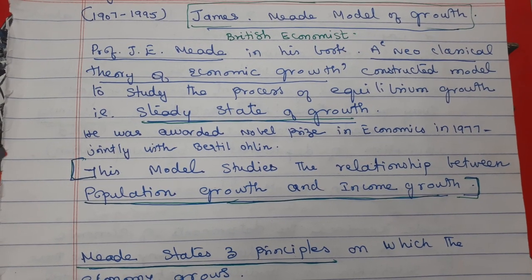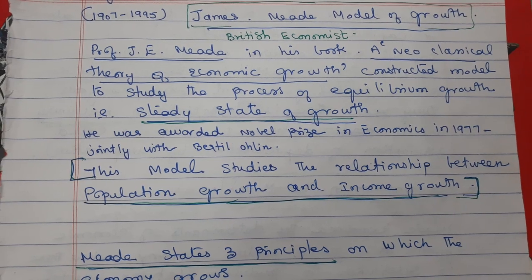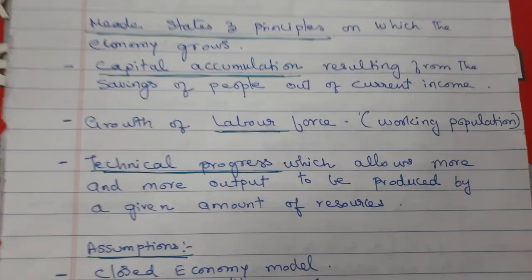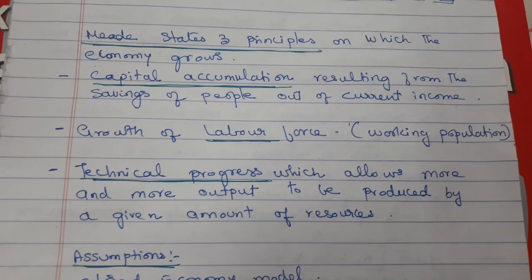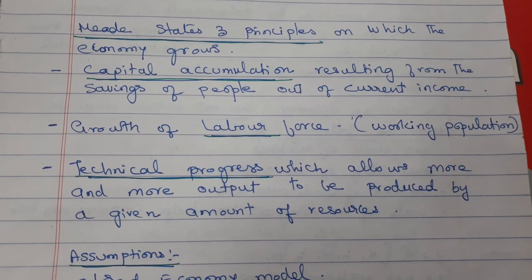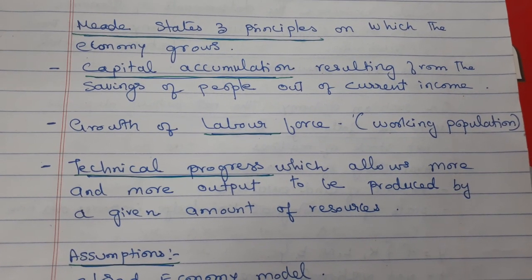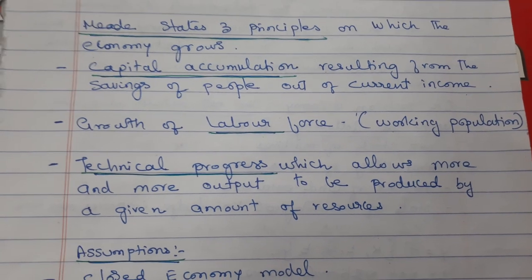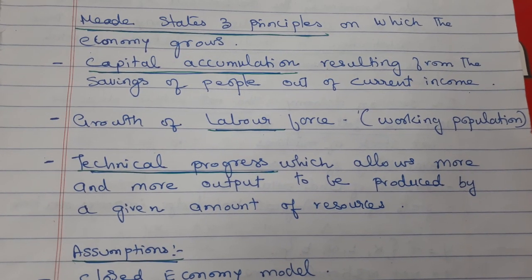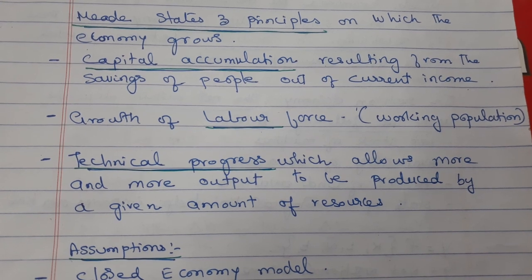This model studies the relationship between population growth and economic growth. Meade states three principles on which the economy grows: capital accumulation, growth of labour force, and technical progress.